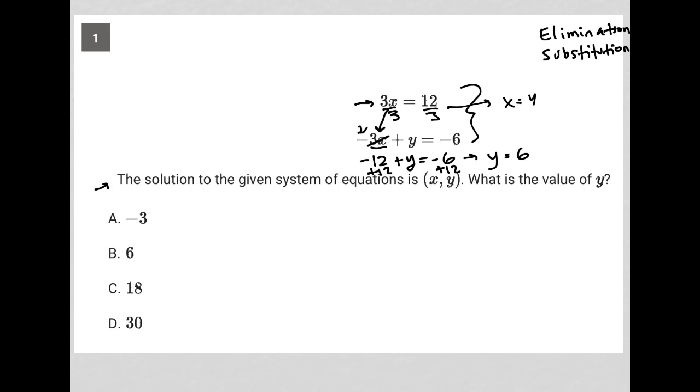The question says the solution to the given system of equations is x comma y. We already know that that's really 4 comma 6. What is the value of y? So we found that to be y equals 6. So our answer here is choice B.